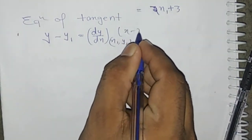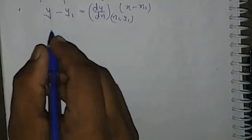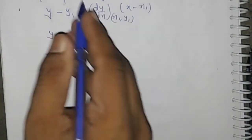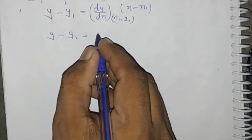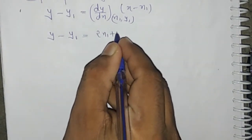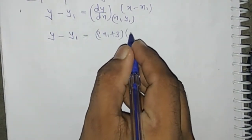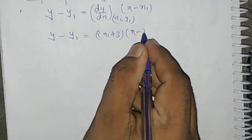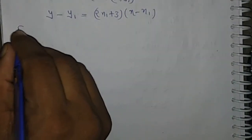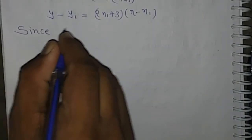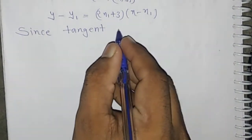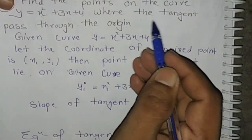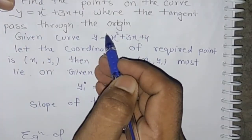The equation of tangent is: y − y₁ = (2x₁ + 3)(x − x₁). Since the tangent passes through the origin (0, 0), we substitute those values into the equation.